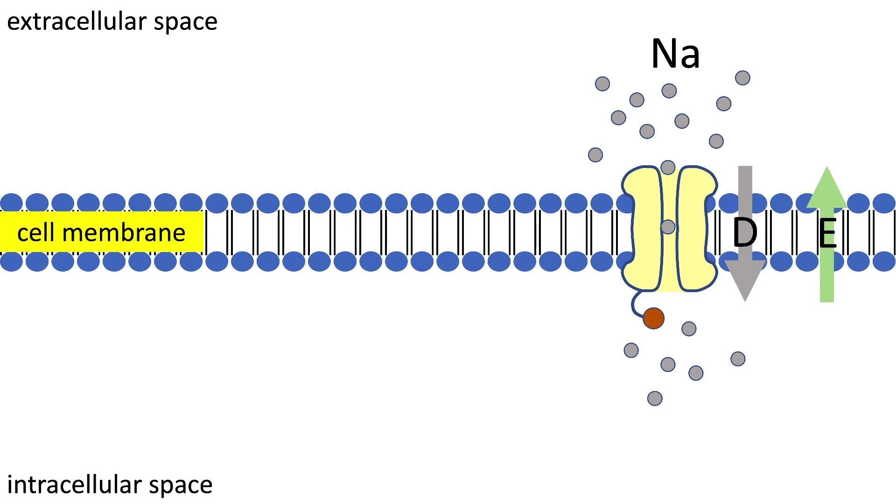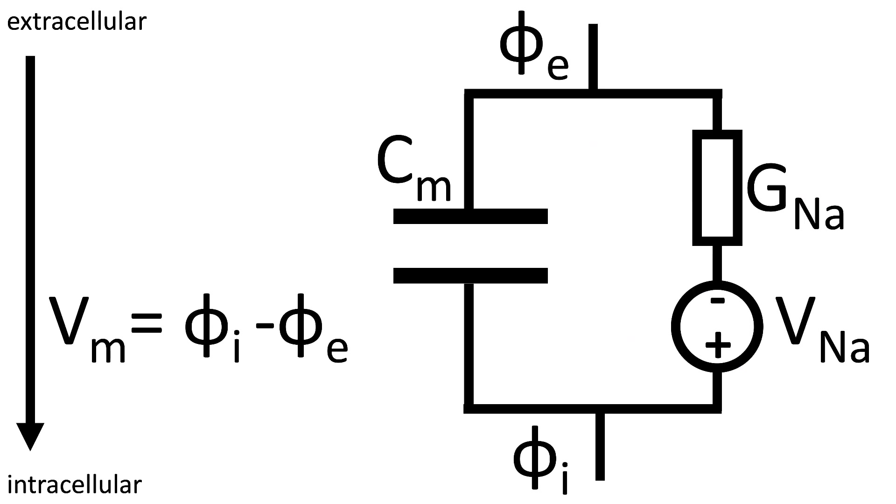Now we have to represent this Nernst potential in our circuit, which is done by adding a voltage source with a voltage exactly at the Nernst potential. In the circuit it is set in serial with the conductance.